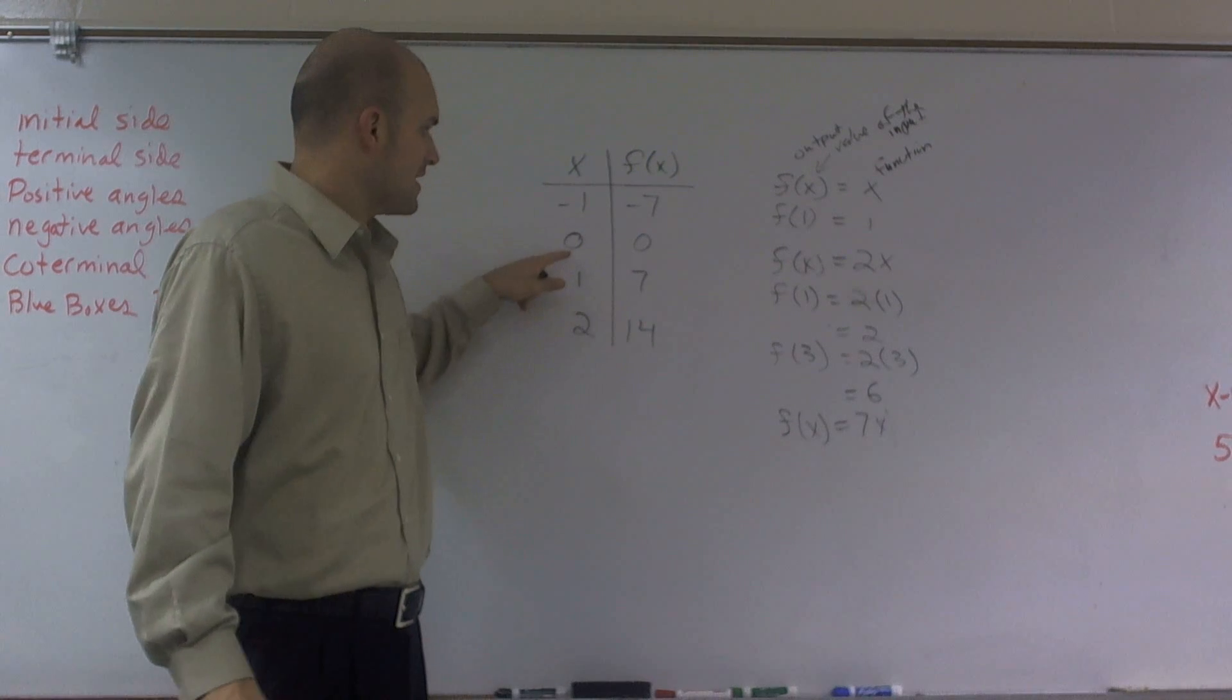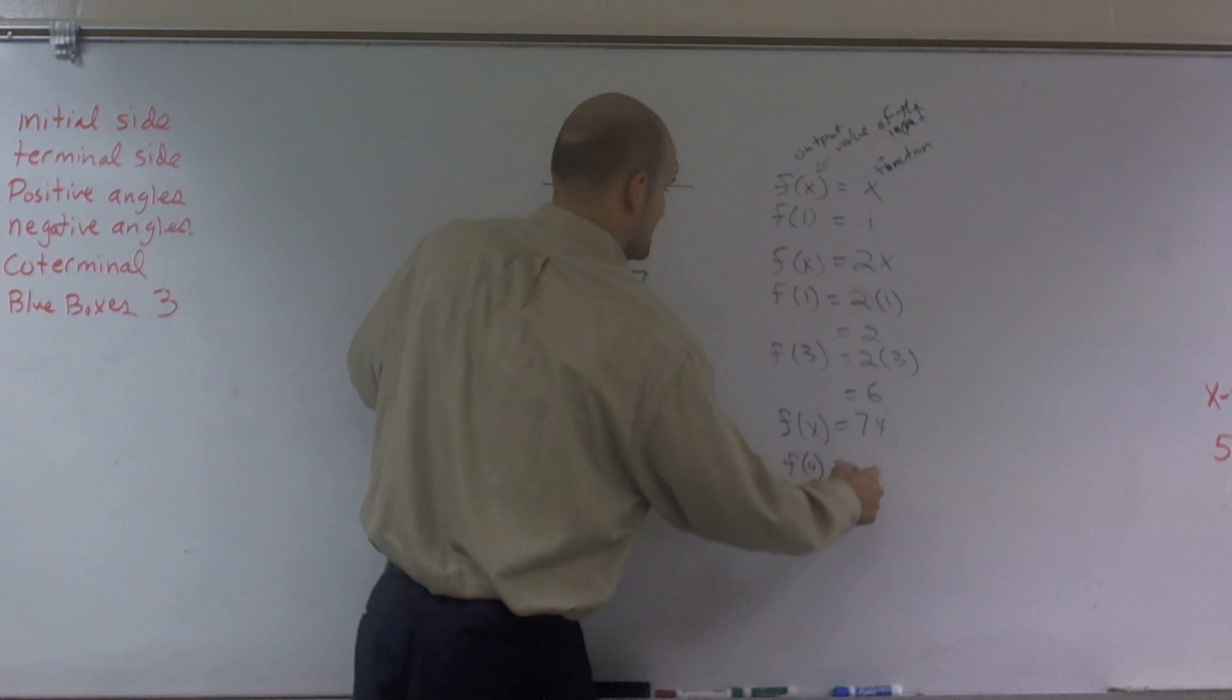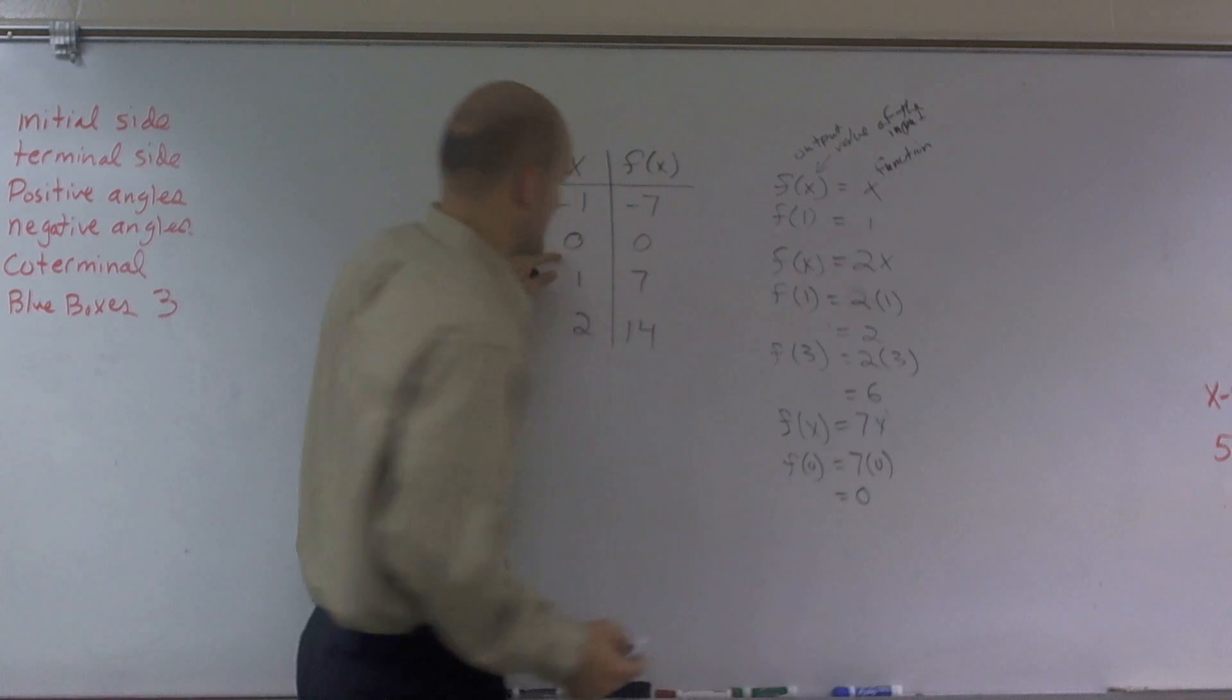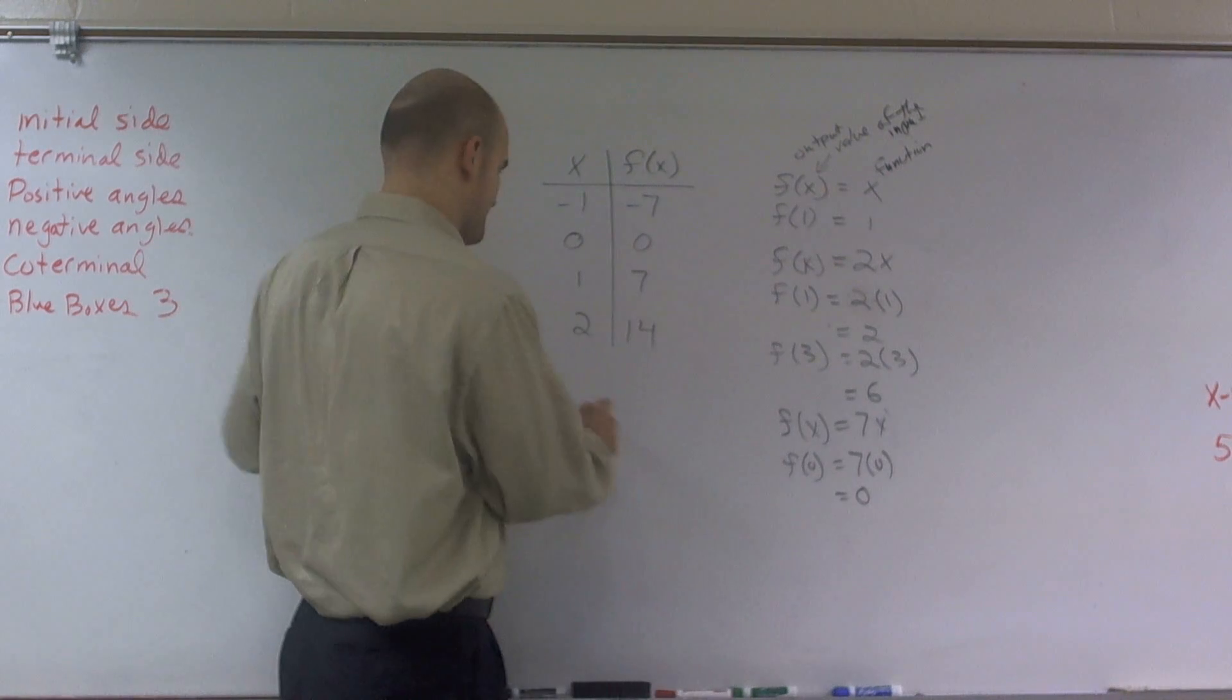Does that work for the next one? If I plug in a 0, f of 0 equals 7 times 0. Do I get 0 again? Well, 7 times 0 is obviously 0. What about f of 1?